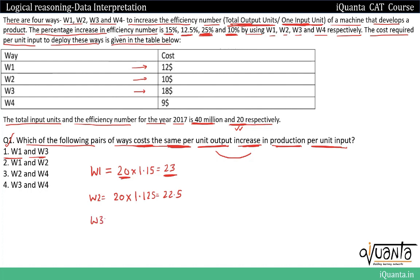For W3, increased by 25%, so 20 × 1.25 = 25 as the new efficiency number. For W4, increased by 10%, so 20 × 1.1 = 22. Earlier for 1 input unit we were getting 20 output units. Now with W1 we get 23 — an increase of 3. For W2, increase from 20 to 22.5 — an increase of 2.5. For W3, increase from 20 to 25 — an increase of 5. For W4, the increase is 2.